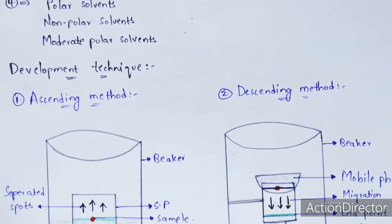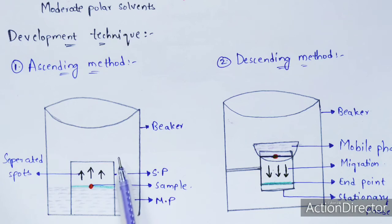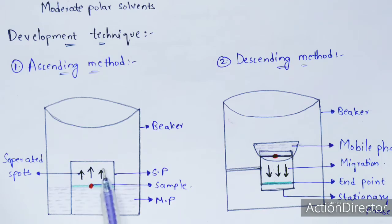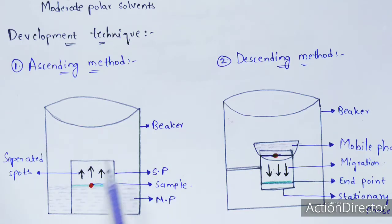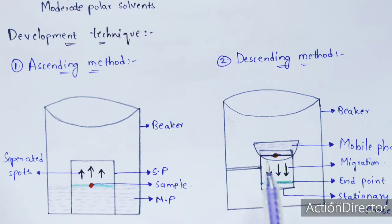Three types of development techniques are used in paper chromatography: ascending technique, descending technique, and radial technique. In the ascending technique, the migration of particles moves in an upward direction — against gravitational force. When the arrow mark is upward, the particles move against gravity.